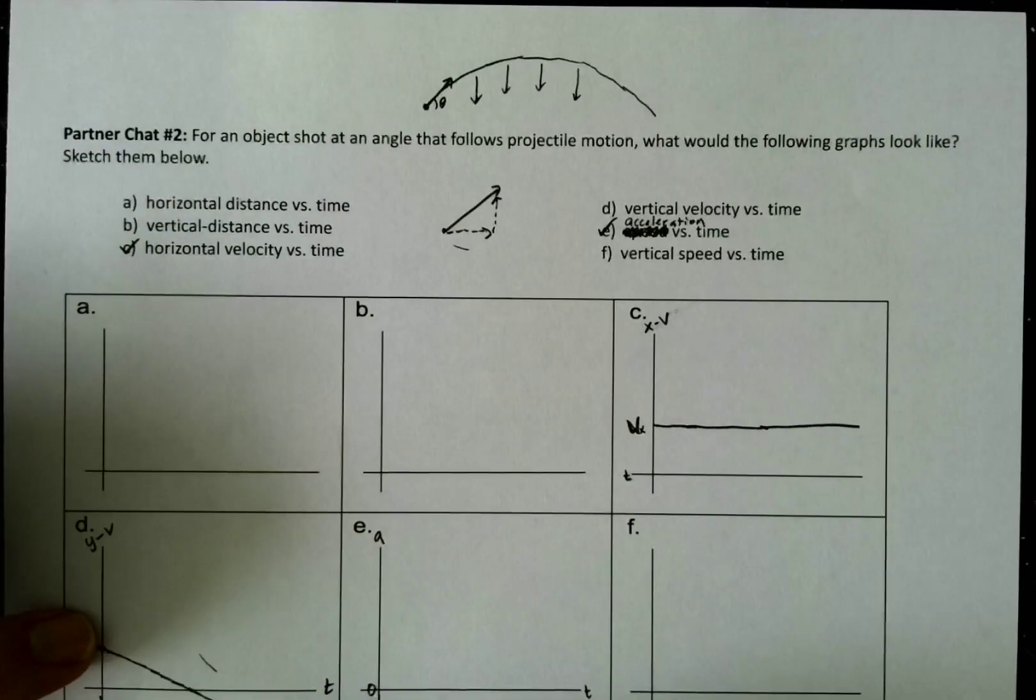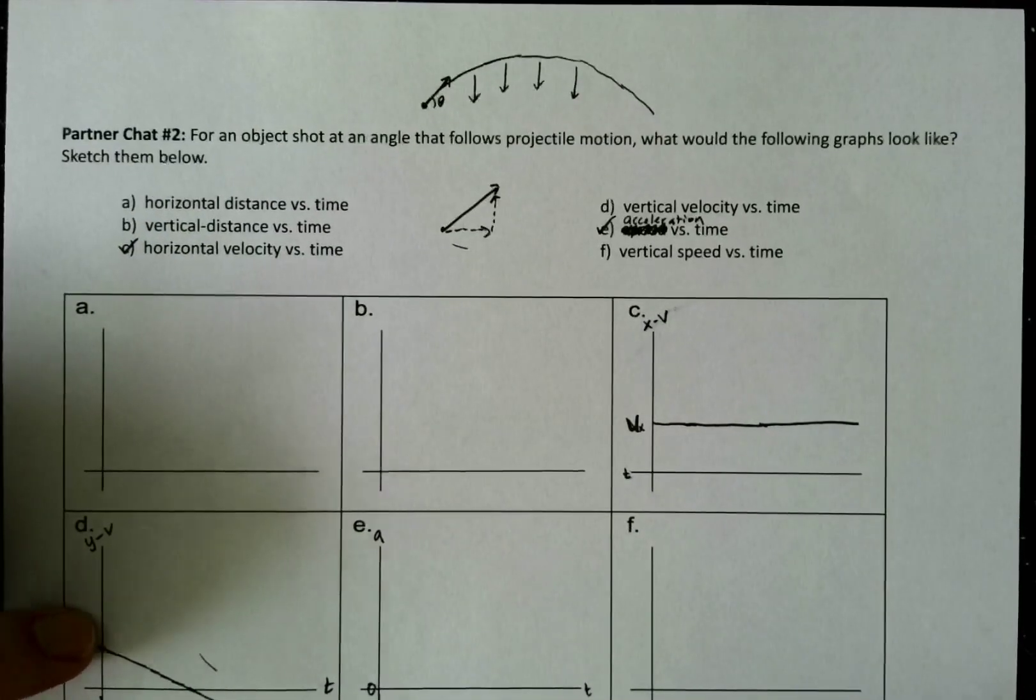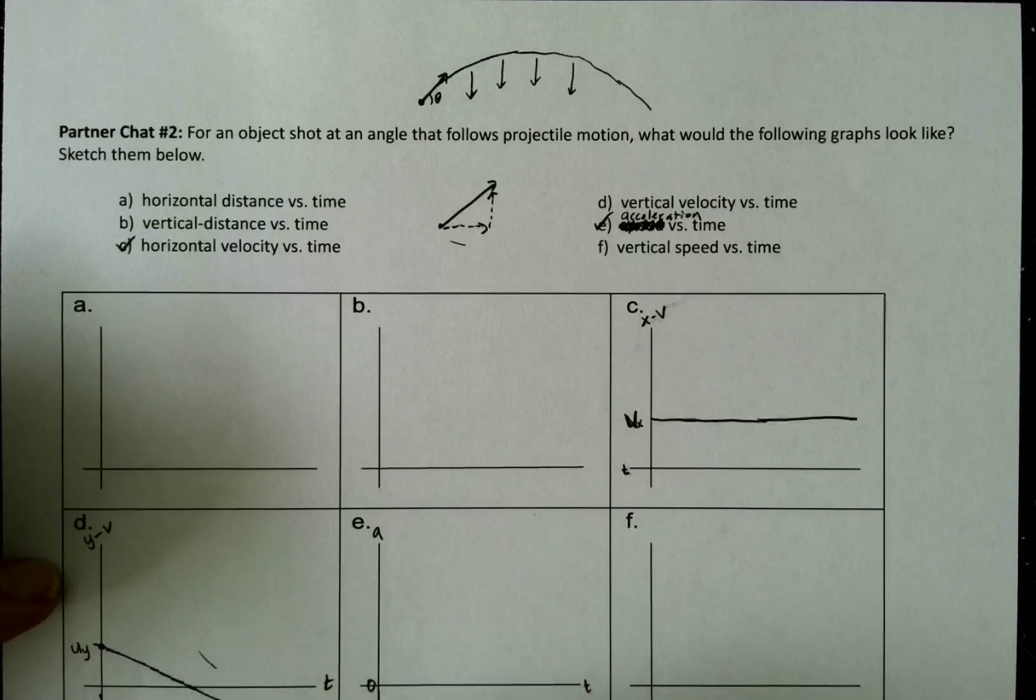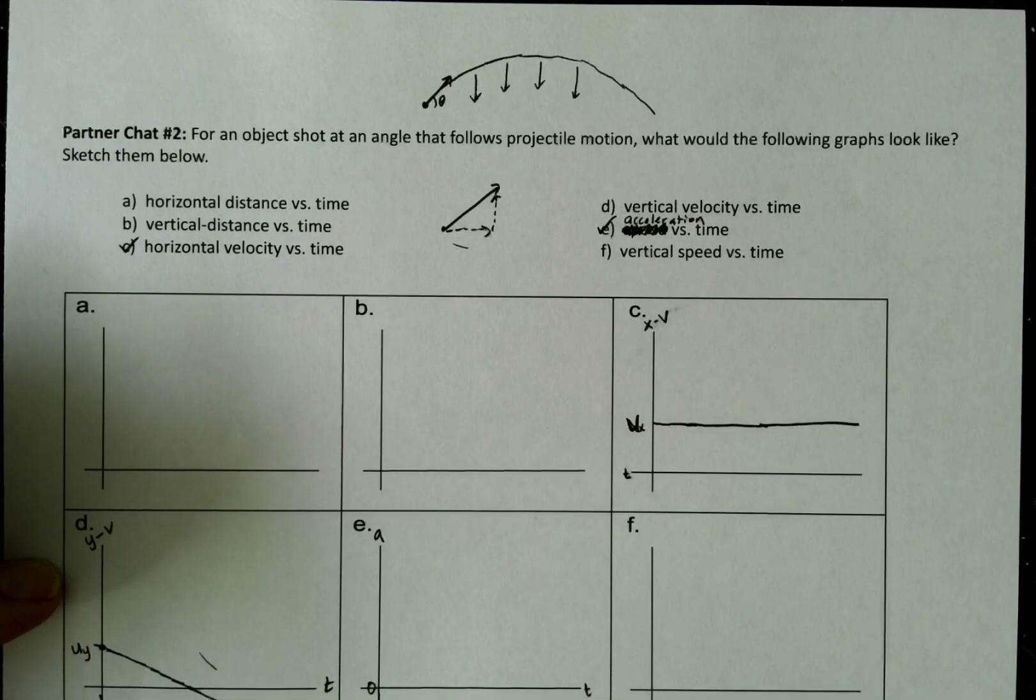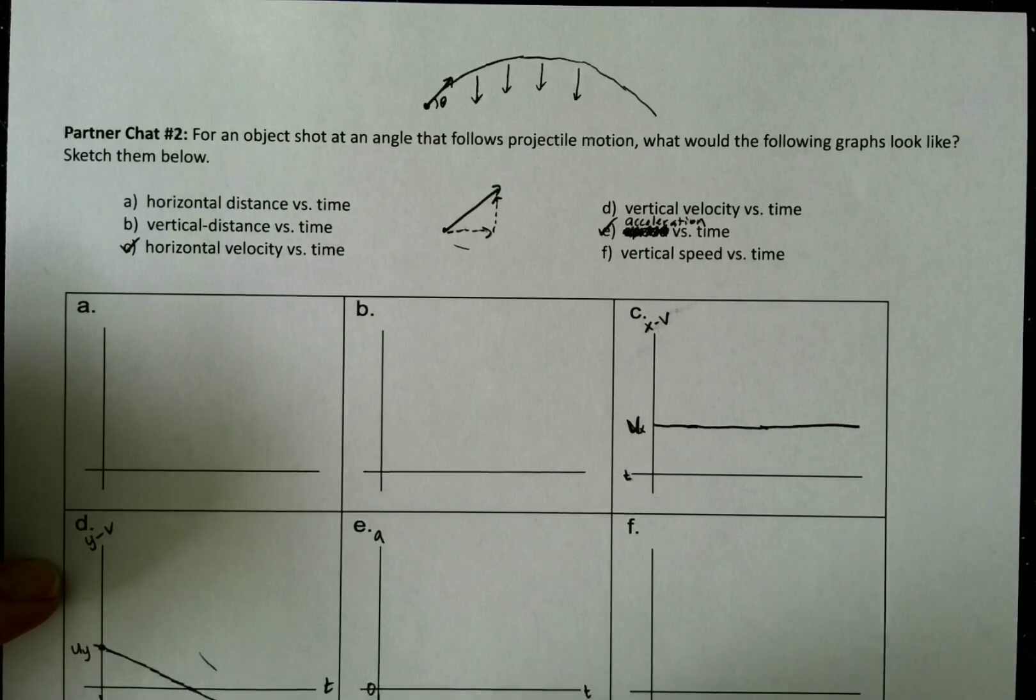Okay. Remember, it should be a straight line because g is constant. And then it should essentially start and end at the same vertical velocity because of what we talked about in class. So you can prove that using your SUVAT if you want.